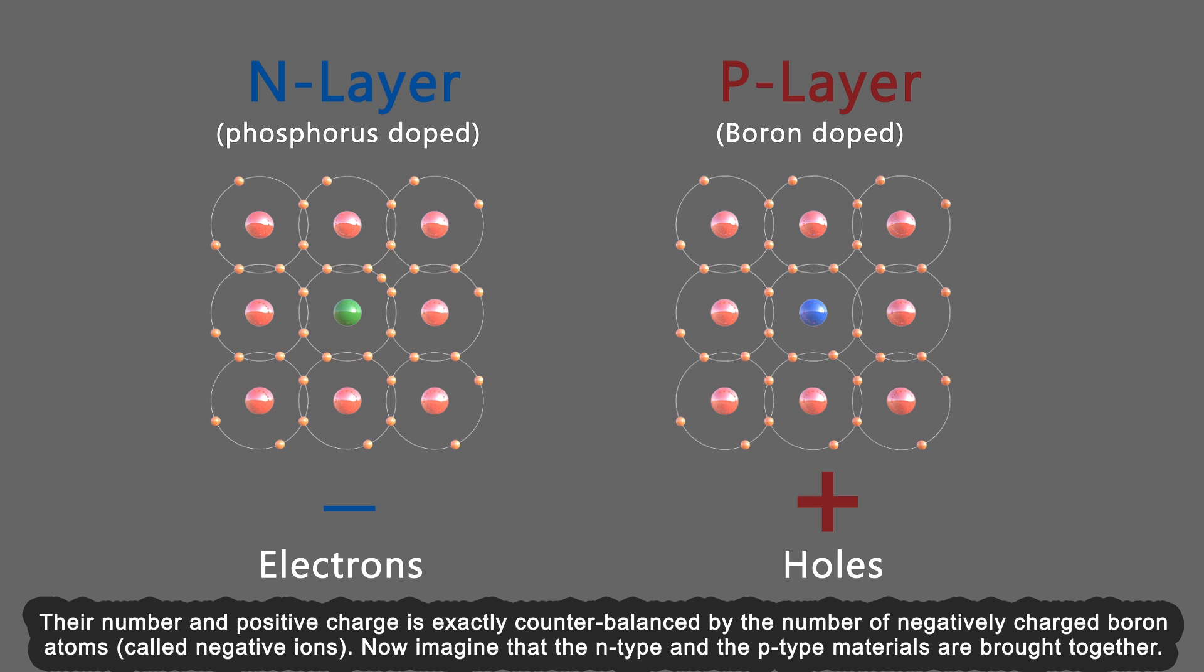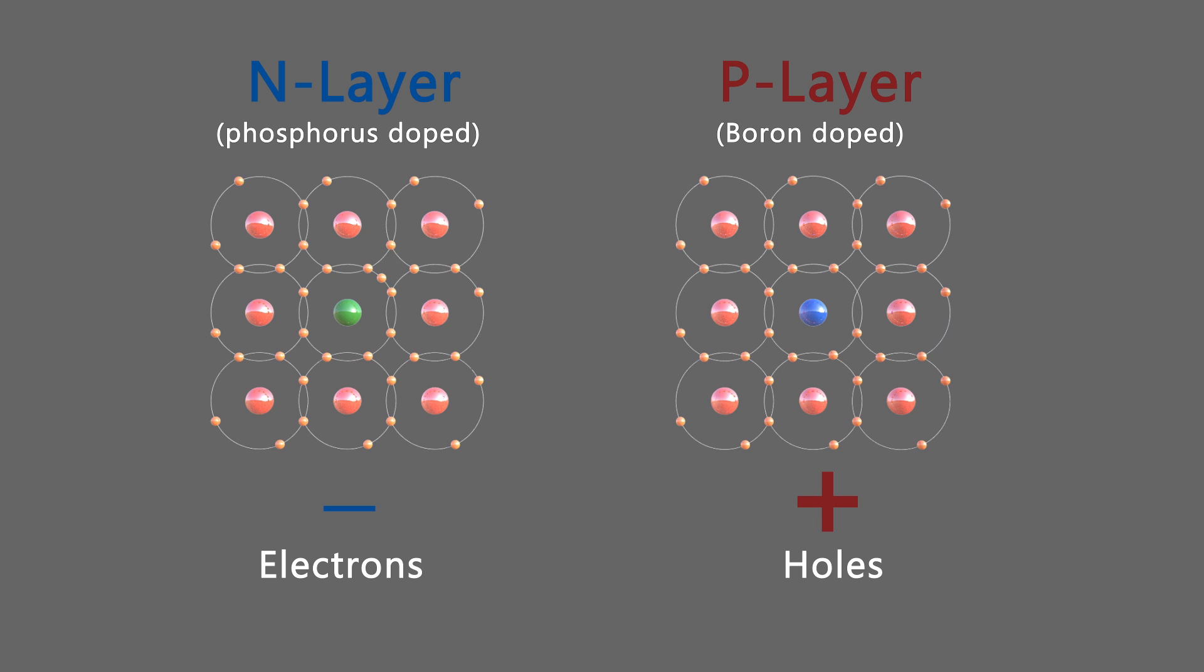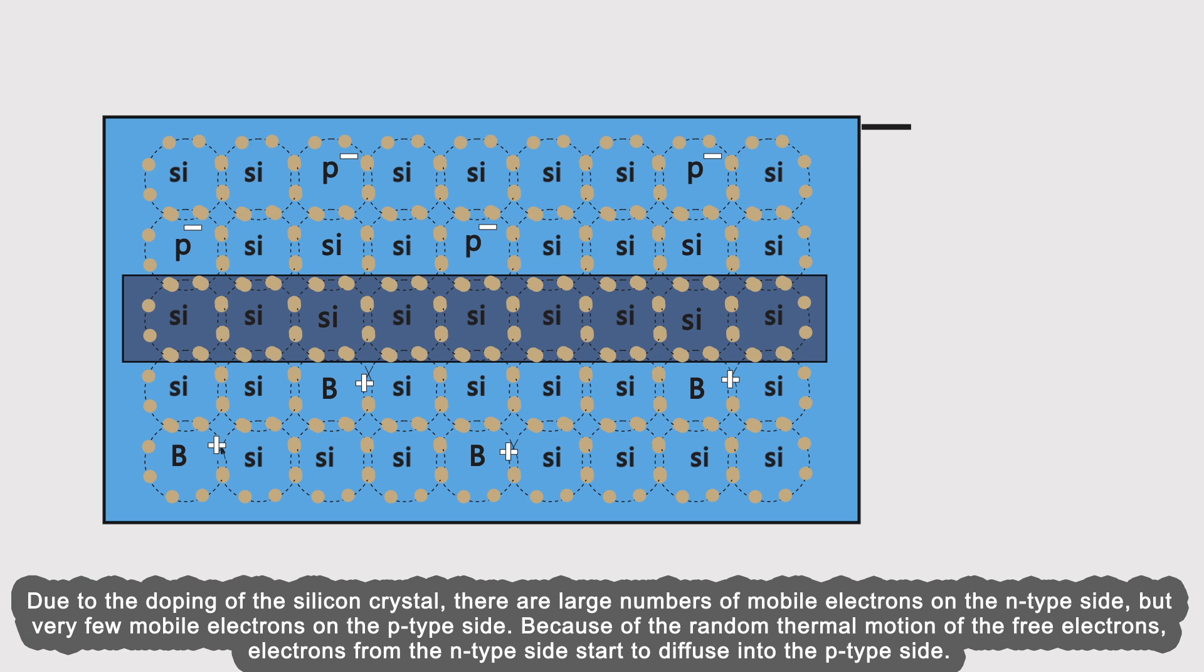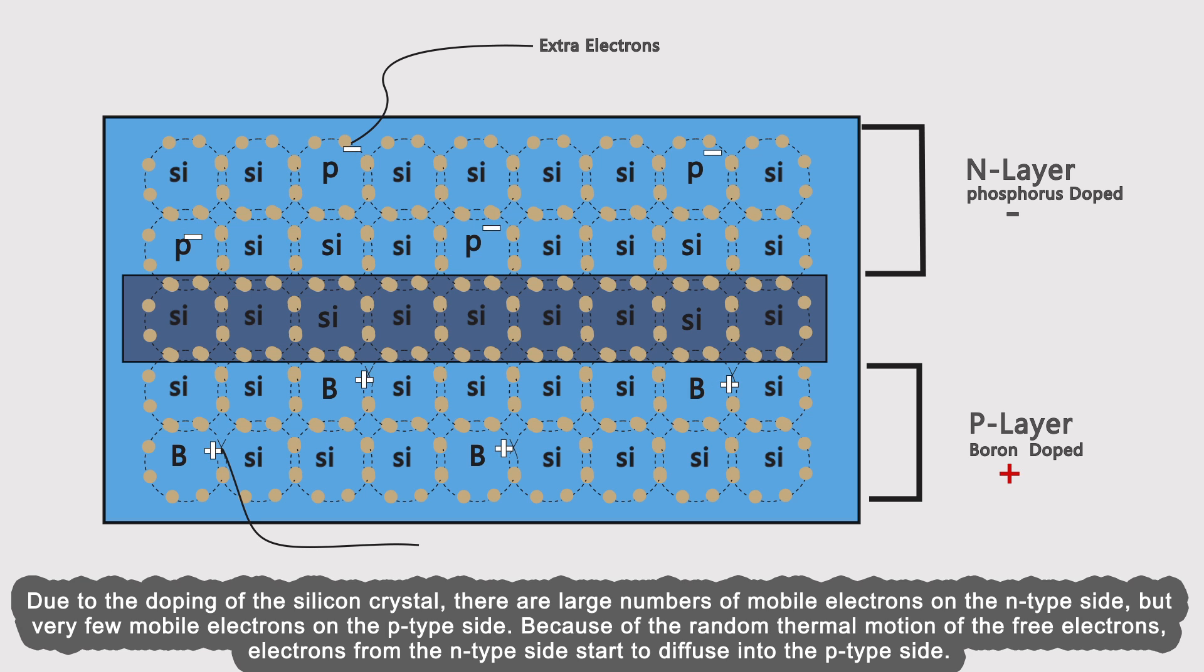Now imagine that the n-type and the p-type materials are brought together. Due to the doping of the silicon crystal, there are large numbers of mobile electrons on the n-type side but very few mobile electrons on the p-type side. Because of the random thermal motion of the free electrons, electrons from the n-type side start to diffuse into the p-type side.